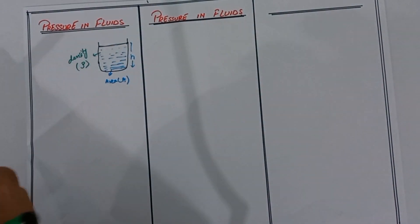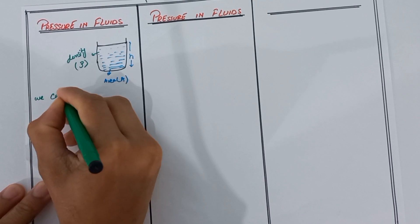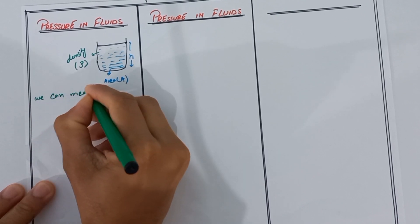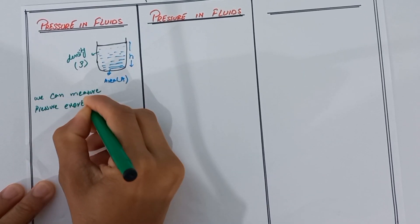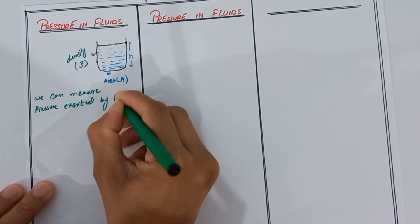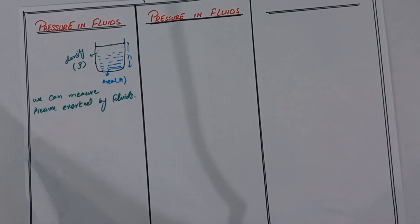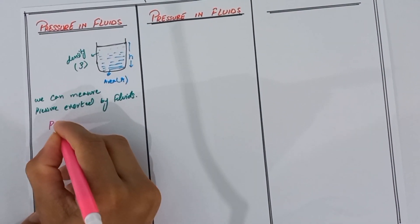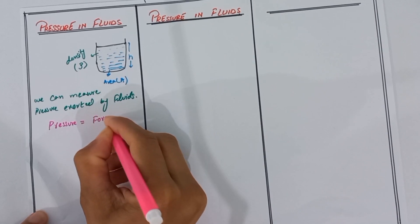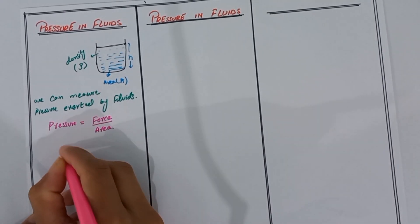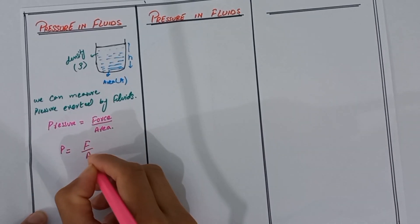Now we can measure the pressure exerted by fluids. We know the formula of pressure: pressure is equal to force per unit area. Pressure is denoted by P, force is denoted by F, and area is denoted by A.